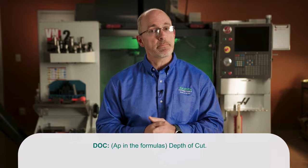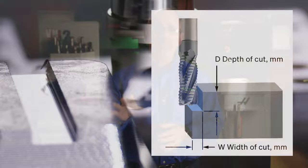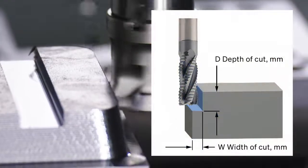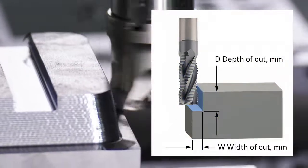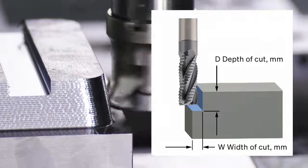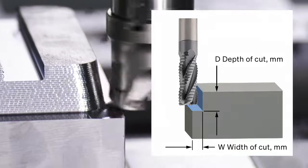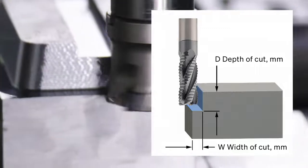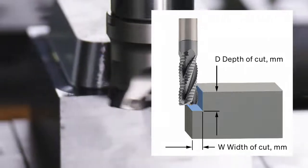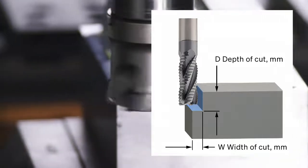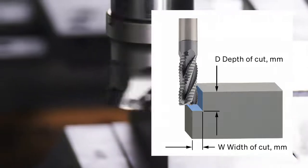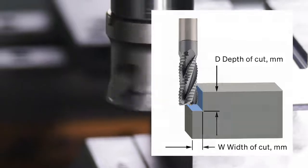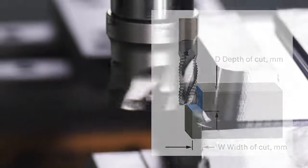DOC, also referred to as AP, means depth of cut and refers to the Z axis engagement of the tool. Here's a different diagram that does a better job of showing this variable. This shows us both width of cut and depth of cut in relation to a typical end mill. We see the width of cut shown at the bottom, indicating what percentage of the tool diameter is engaged with the material. The depth of cut, or DOC, is shown as the amount of flute length engaged at one time in the cut.